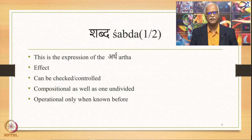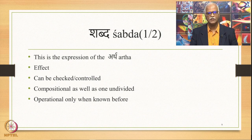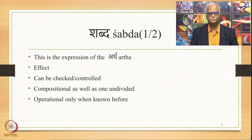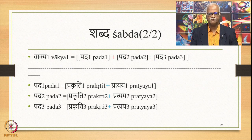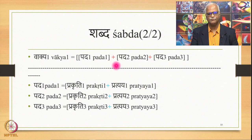The red plus sign indicates the exclusive Vakyartha which is a combination of Padarthas, and the blue plus sign within the Padarthas indicates the over-and-above meaning available from Prakrityartha and Pratyayartha, which is exclusively the Padarthas. Something similar gets replicated at the Shabdha level. Shabdha is the expression of the Artha to be communicated. This is an effect, a Kariya. This is also compositional as well as one undivided at the same time, and operational only when known before.